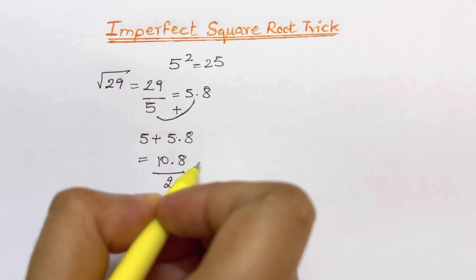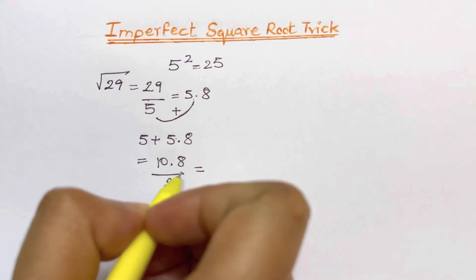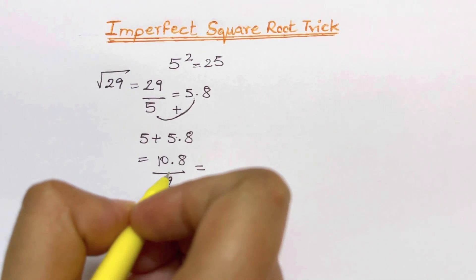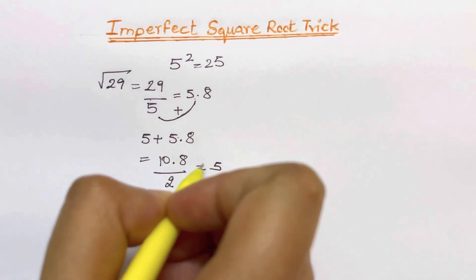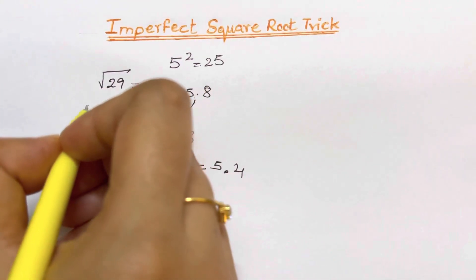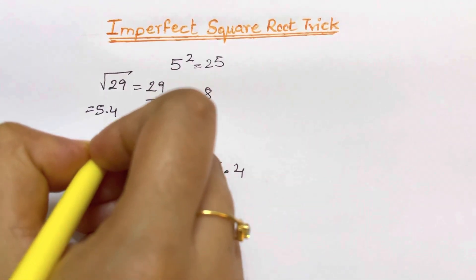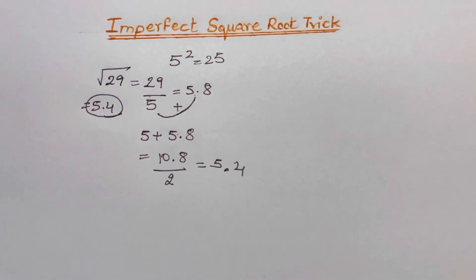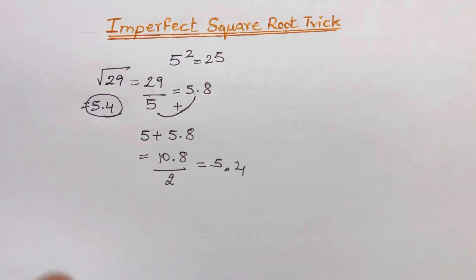So what we're going to get is 10.8 divided by 2, which is just 2 times 5 gives you 10, and 2 times 4 gives you 8. So you have 5.4. That's your answer for the square root of 29. That's an approximate answer.